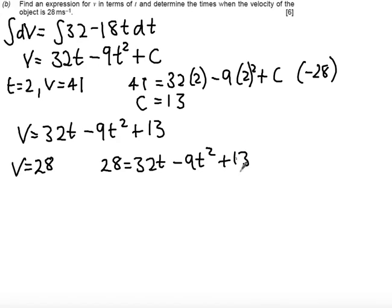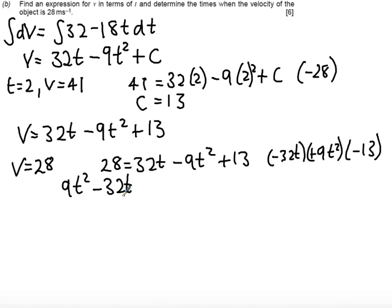So rearranging the equation, subtracting 32t from both sides, adding a 9t squared to both sides, subtracting 13 from both sides, so that we get a quadratic. And I get 9t squared minus 32t plus 15 equals 0.